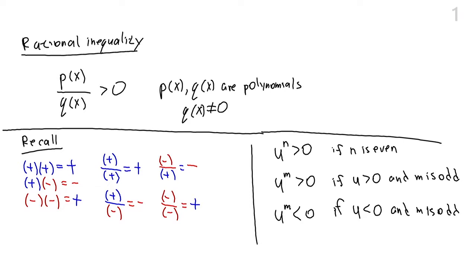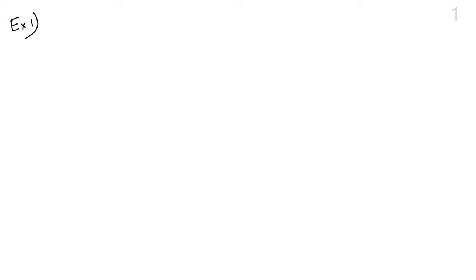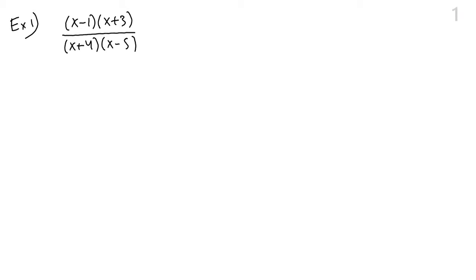The procedure for solving rational inequalities is pretty much the same as solving polynomial inequalities. We write down all the points where our rational expression can possibly change sign. A rational expression in this example is going to be factored, and we need to find all the x's such that this whole expression is going to be greater than zero.